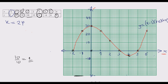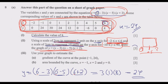Let us move to number 3: use your graph to estimate the gradient of the curve at point (negative 1, 24). We go to that point — the second plotted point — draw a tangent line, and find the slope of that tangent line. That is what is required.